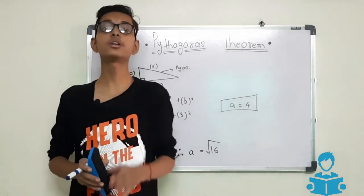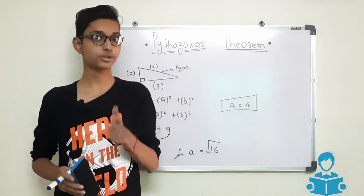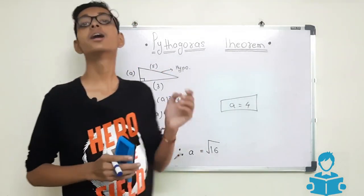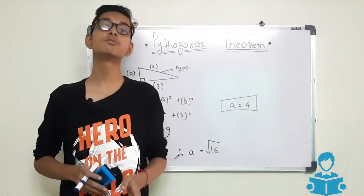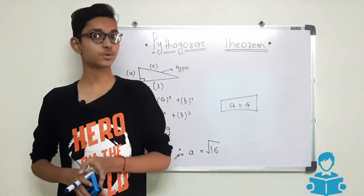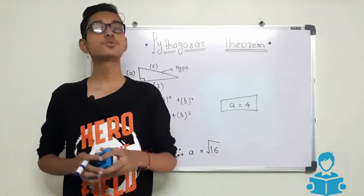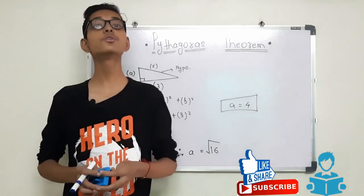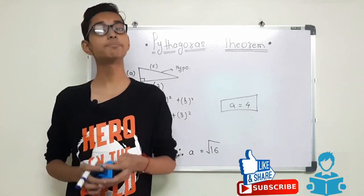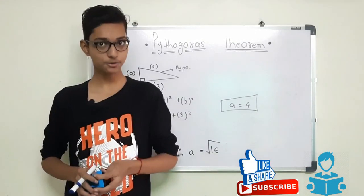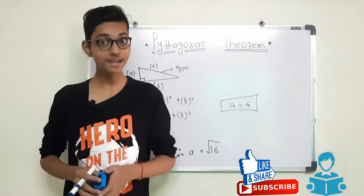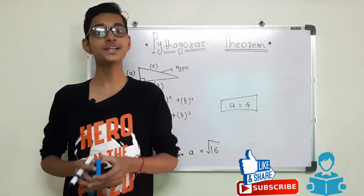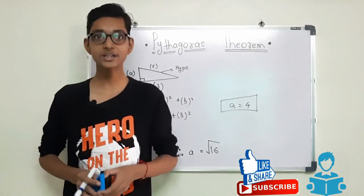We learnt what is Pythagoras theorem. Pythagoras theorem is: hypotenuse square is equals to A square plus B square. To learn such concepts, please subscribe to my channel and don't forget to hit the bell icon so that you will get notified when I upload new videos. And don't forget to like and share my video. Thank you.